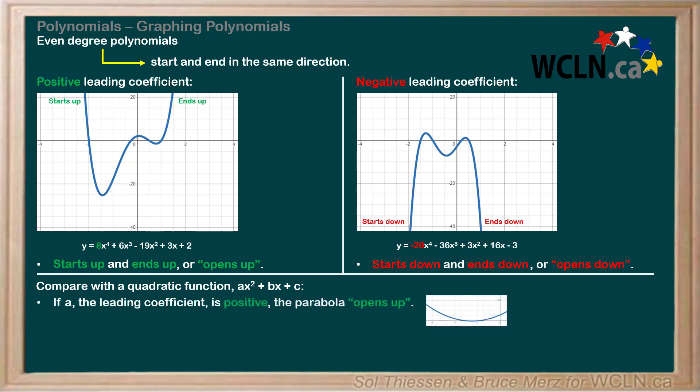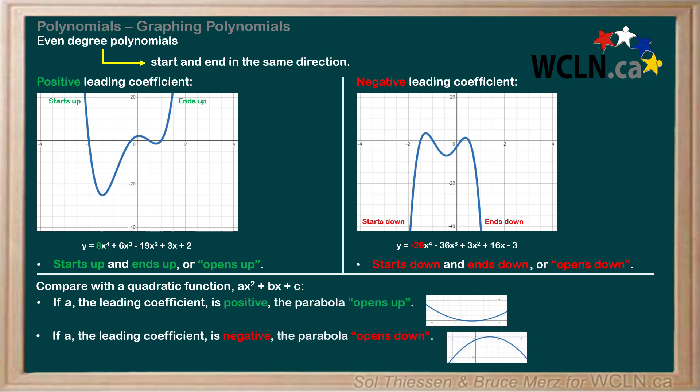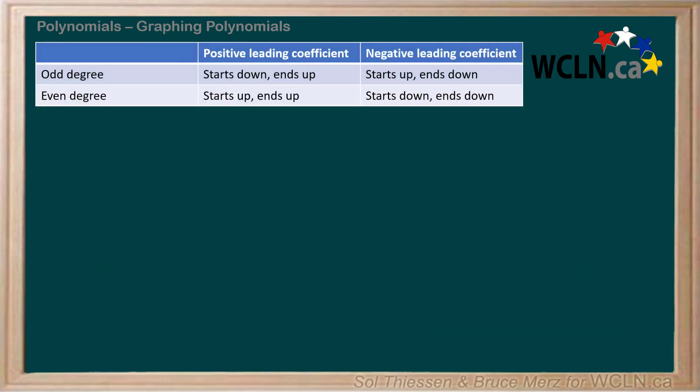If a, the leading coefficient, is positive, the parabola opens up. If a is negative, the parabola opens down. We can apply this to all even degree polynomials. That's all for end behavior. To summarize, here are the four possible cases and the corresponding end behavior laid out in table format. Make sure you are comfortable with this before moving forward.